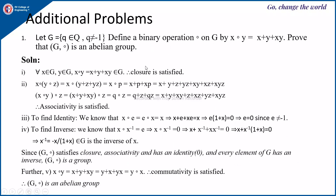Next problem: let G = {Q : Q ≠ -1}. Define a binary operation on G by x∘y = x + y + xy. We need to prove that (G, ∘) is an abelian group. For all x, y in G, x∘y = x + y + xy, which is also an element of G. Therefore, closure is satisfied.